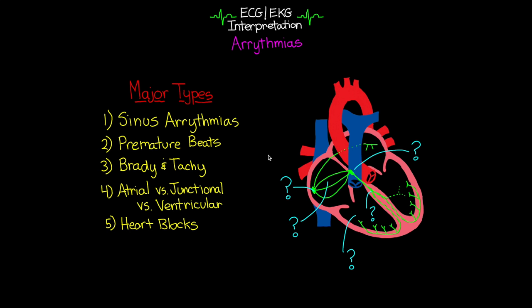This is our fourth lesson in this series in which we continue our discussion about arrhythmias. Specifically in this lesson, we're going to talk about our atrial and junctional arrhythmias. In the last lesson, we started our discussion with arrhythmias talking about our sinus arrhythmias, our premature complexes, and our Brady and Tachy arrhythmias. And so we're going to pick up where we left off and start into our atrial arrhythmias.